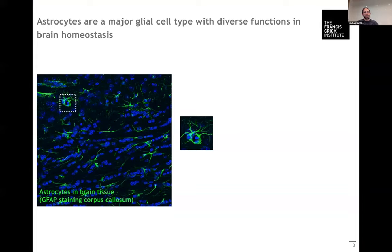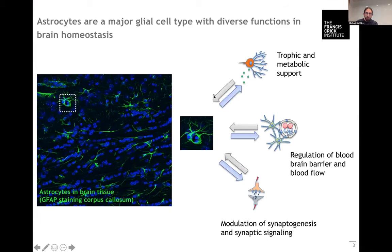We're interested in astrocytes because astrocytes are one of the major cell types in the brain and they have quite a diversity of different functions. As you can see here they're widely distributed throughout the brain parenchyma.